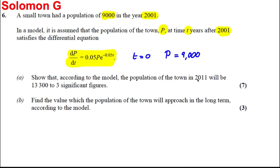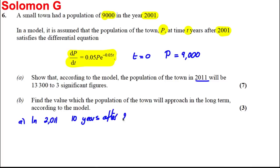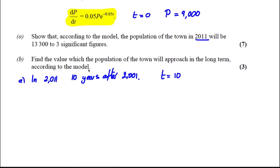Show that according to the model the population of the town in 2011 will be equal to this, to three significant figures. In 2011 we are 10 years after 2001, so T is equal to 10, and they're asking for what the population is. So we're going to solve this differential equation.